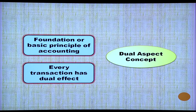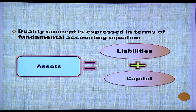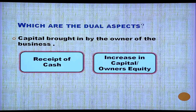Next is the dual aspect concept, the foundation principle of accounting. Every transaction has a dual effect — it affects two accounts, and transactions are recorded at two places. Duality concept is expressed in terms of the fundamental accounting equation: assets equals liabilities plus capital. For example, capital brought in by the owner: receipt of cash is one aspect, and increase in capital is the other.